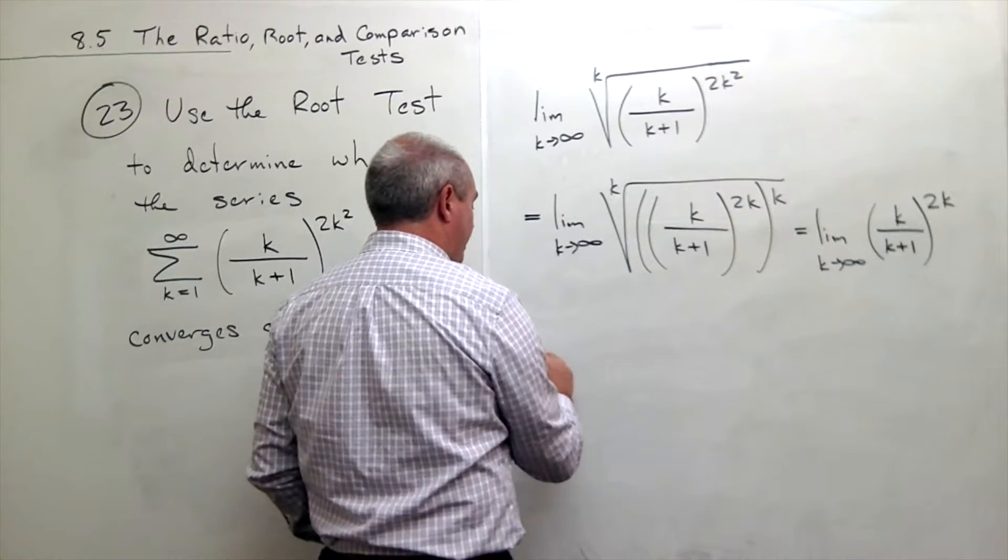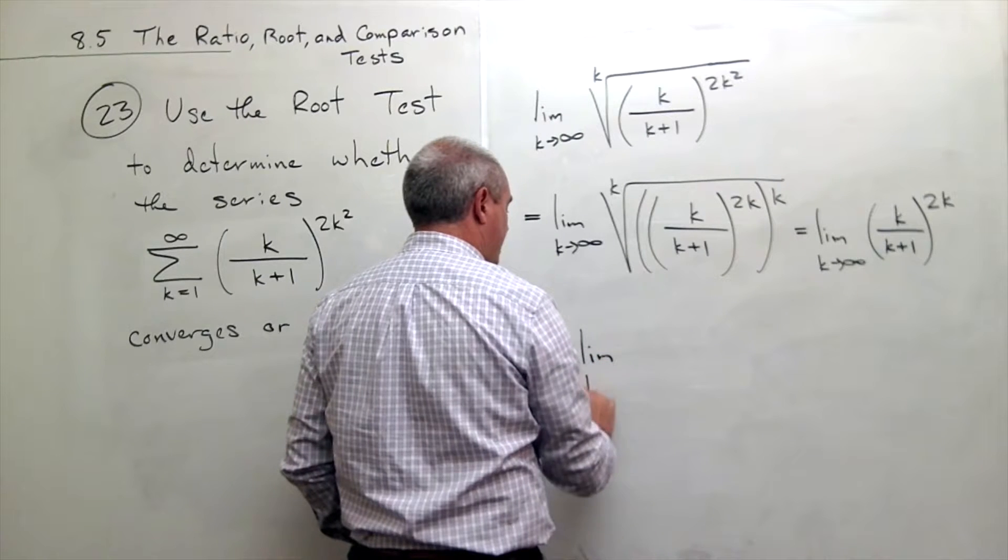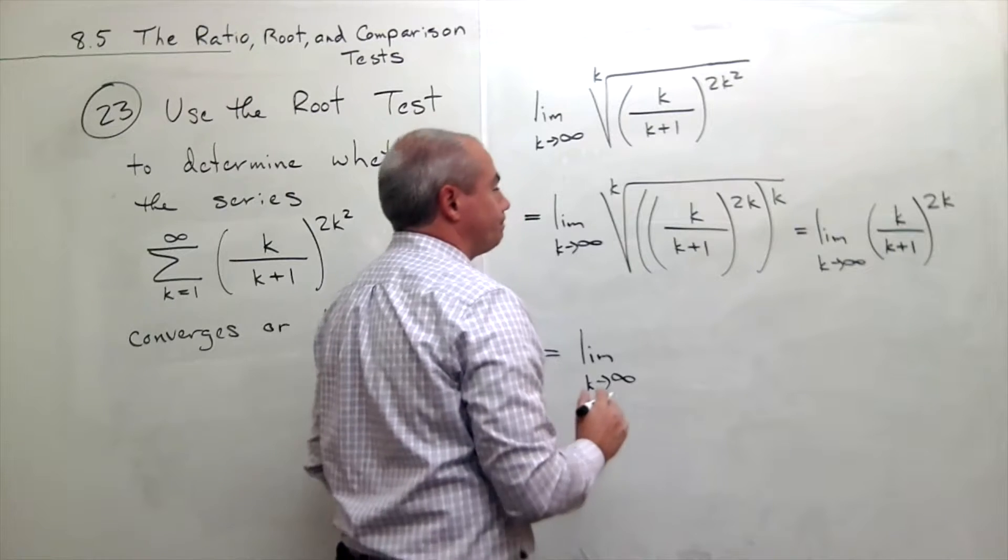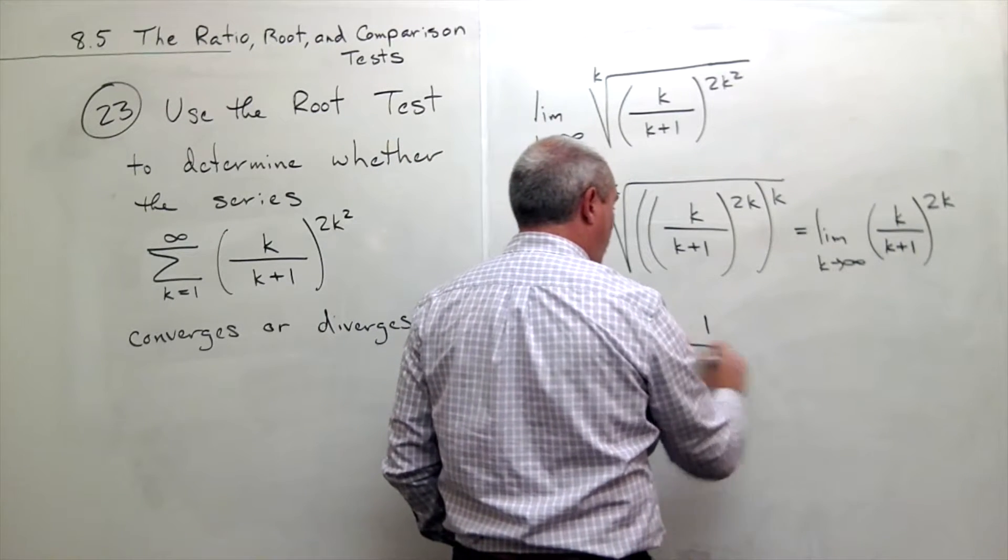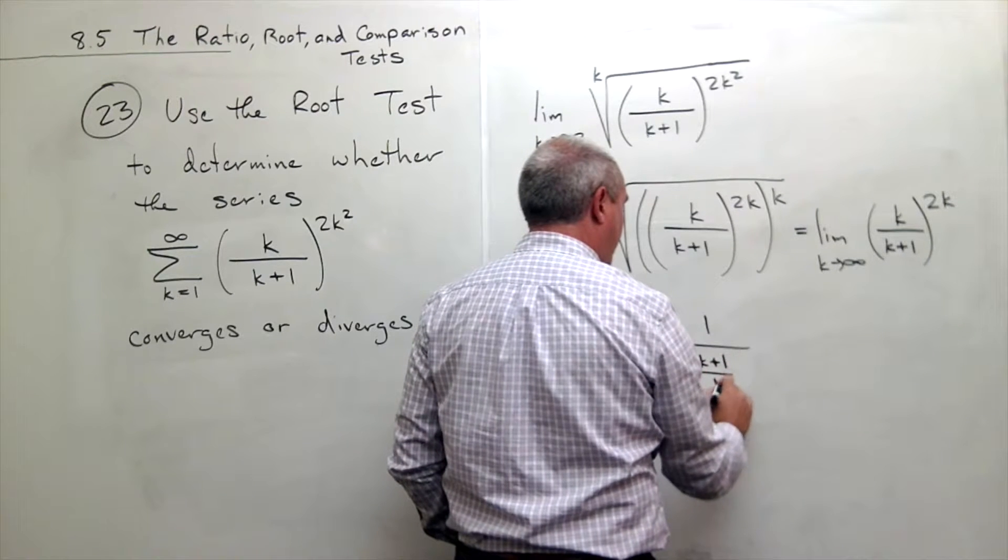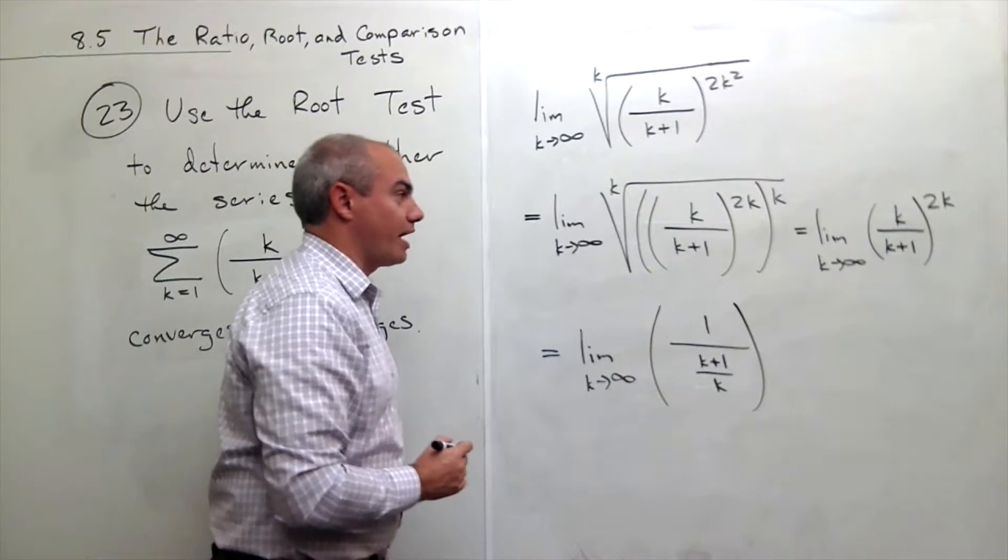So I'm going to rewrite this. Notice this is the limit as k goes to infinity of 1 over k plus 1 over k, that raised to the 2k power.